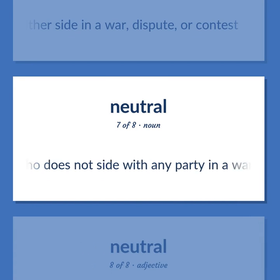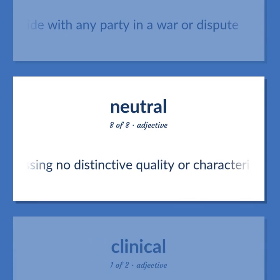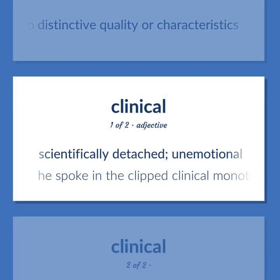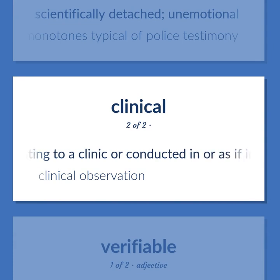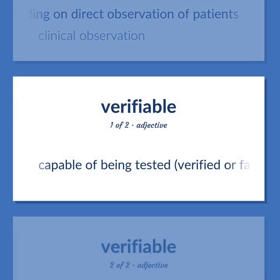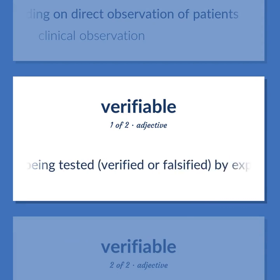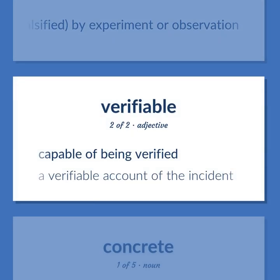One who does not side with any party in a war or dispute. Possessing no distinctive quality or characteristics. Clinical: scientifically detached, unemotional. He spoke in the clipped, clinical monotones typical of police testimony. Relating to a clinic, or conducted in or as if in a clinic, and depending on direct observation of patients. Clinical observation. Verifiable: capable of being tested, verified, or falsified by experiment or observation. Capable of being verified. A verifiable account of the incident.